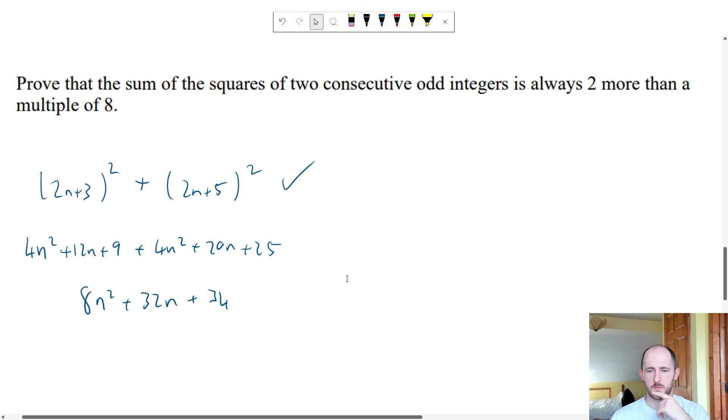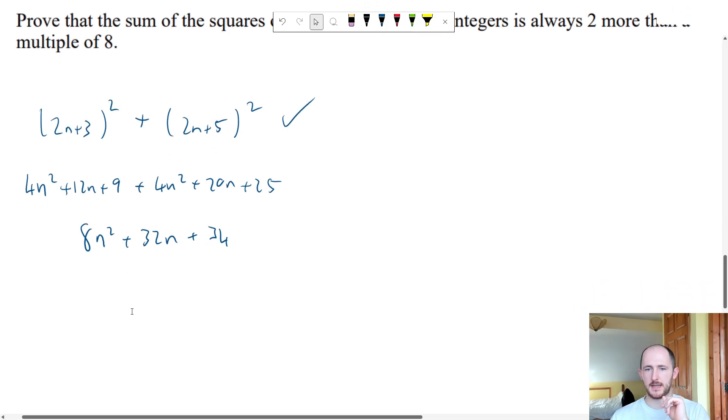Prove it's always two more than a multiple of 8. That's a bit tricky. Here's how I would do it. If you have a look at this, this is divisible by 8, this is divisible by 8 but this isn't. However if I were to break this 34 into 32 plus 2 that is now a multiple of 8. So what they're intending for you to do here is to do this.